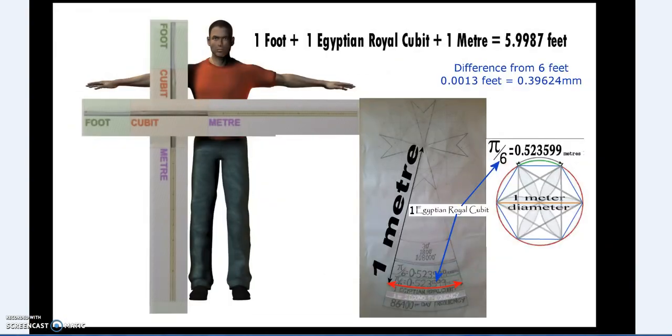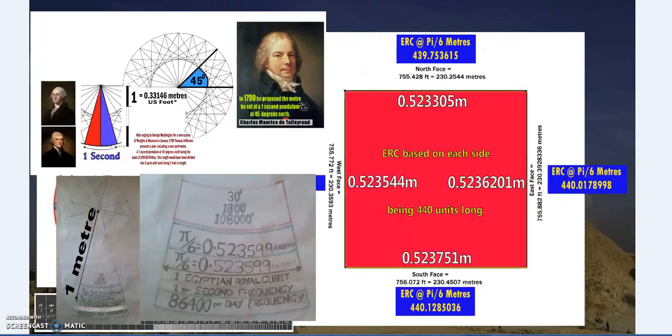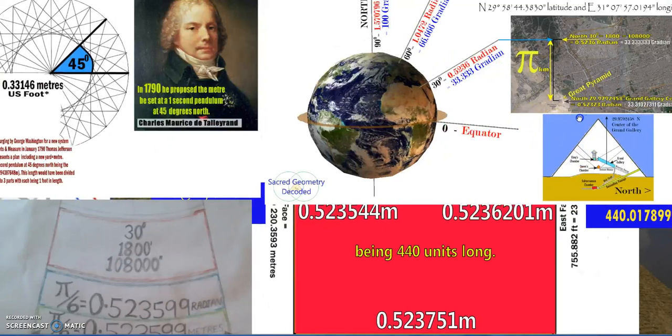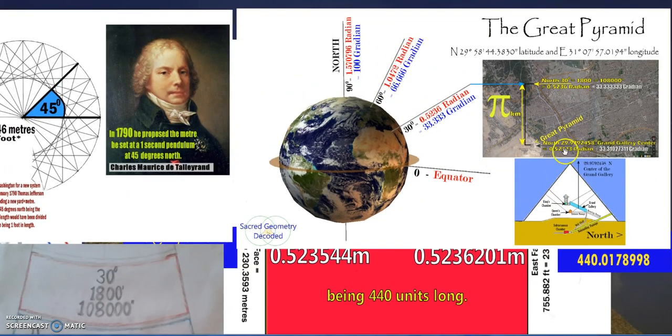This is how it was at the time, and historically speaking, one second is one meter, and that essentially defines the Egyptian royal cubit. A 30 degree pendulum. There are slight variations depending how north you go. One meter pendulum, pi over 6 meters—this is now the modern meter.